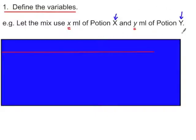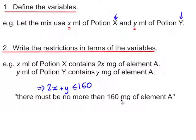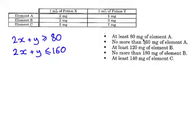Normally the problems we look at have more imaginative names than potion X and potion Y, but there is a difference between the variables x and y and the names of the potions capital X and capital Y. We write each of the restrictions in terms of these variables. In x millilitres of potion X there are 2x milligrams of element A, and in y millilitres of potion Y there are y milligrams of element A. We're told there must be no more than 160mg, so 2x + y ≤ 160. We're also told at least 80mg must be present, so 2x + y ≥ 80. See if you can write inequalities to represent the final three restrictions.